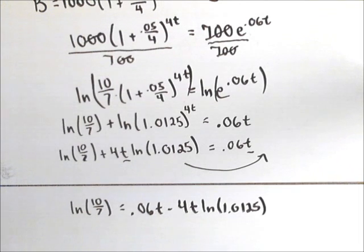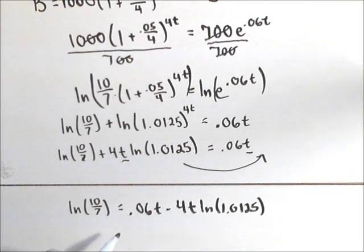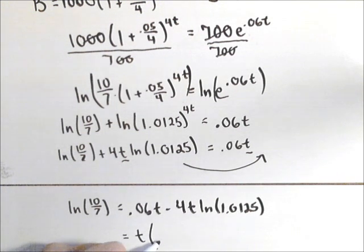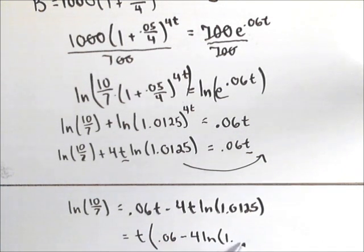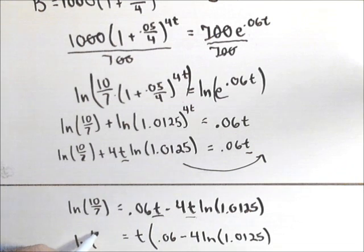The reason we do that is because now a t can be factored out of this right hand side. I can rewrite this right hand side as t times .06t minus 4 ln of 1.0125. So what I've done is I've factored the t out and that's equal to ln of 10 sevenths.